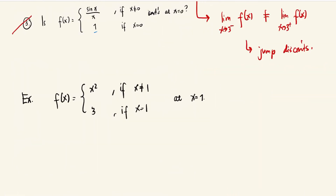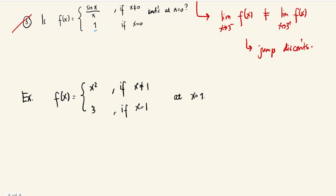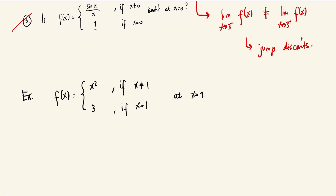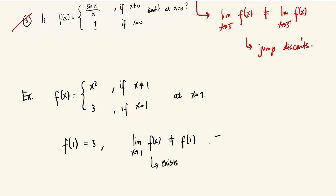For one last example: f(x) = x² if x ≠ 1, and 3 if x = 1. We check continuity at x = 1. Here f(1) = 3, but the limit of f(x) as x approaches 1 equals 1, which is not equal to f(1) = 3. However, since the limit exists, this is classified as removable discontinuity.